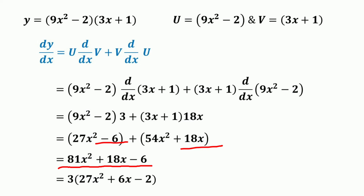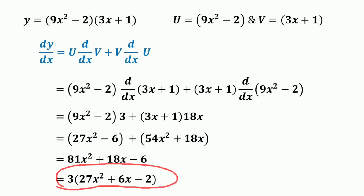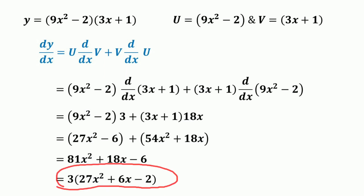By rearranging we get 81x squared plus 18x minus 6. Taking 3 as a common factor, this becomes 3 times (27x squared plus 6x minus 2).